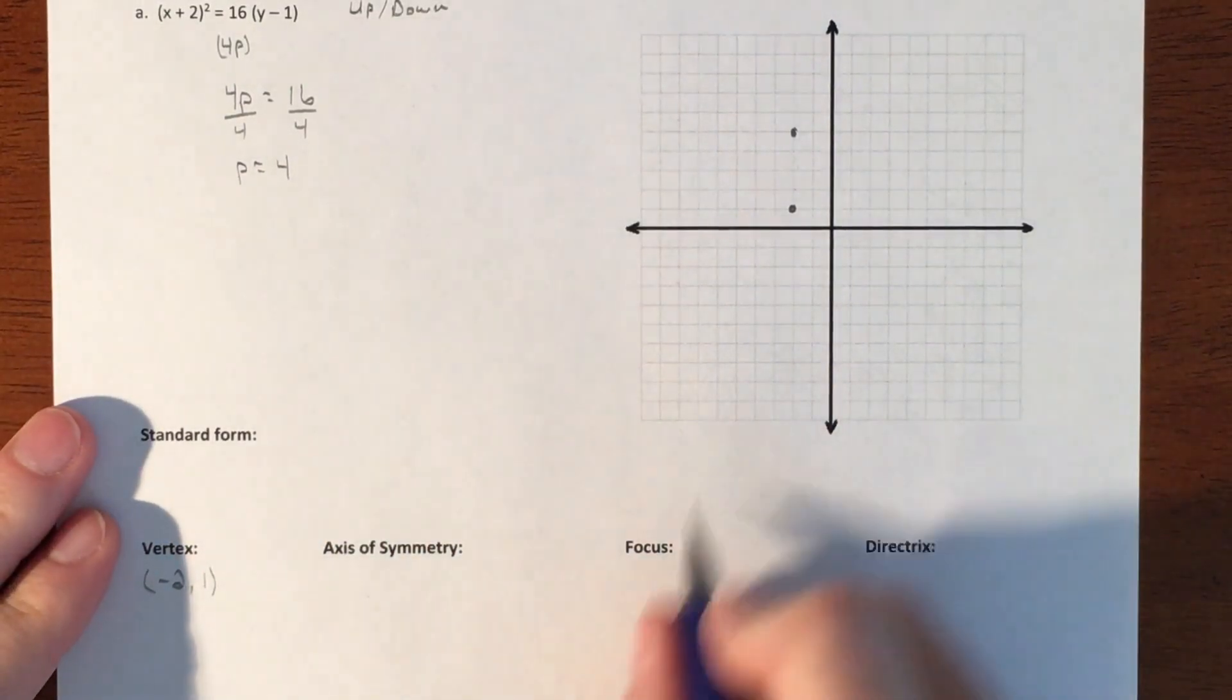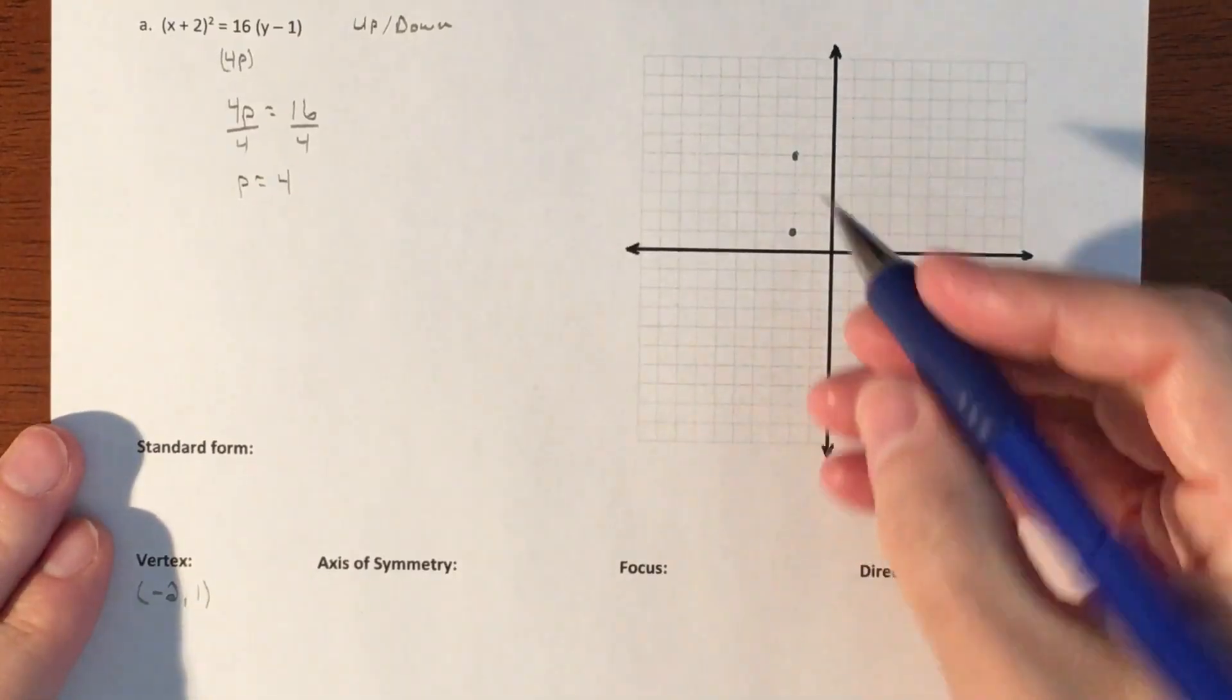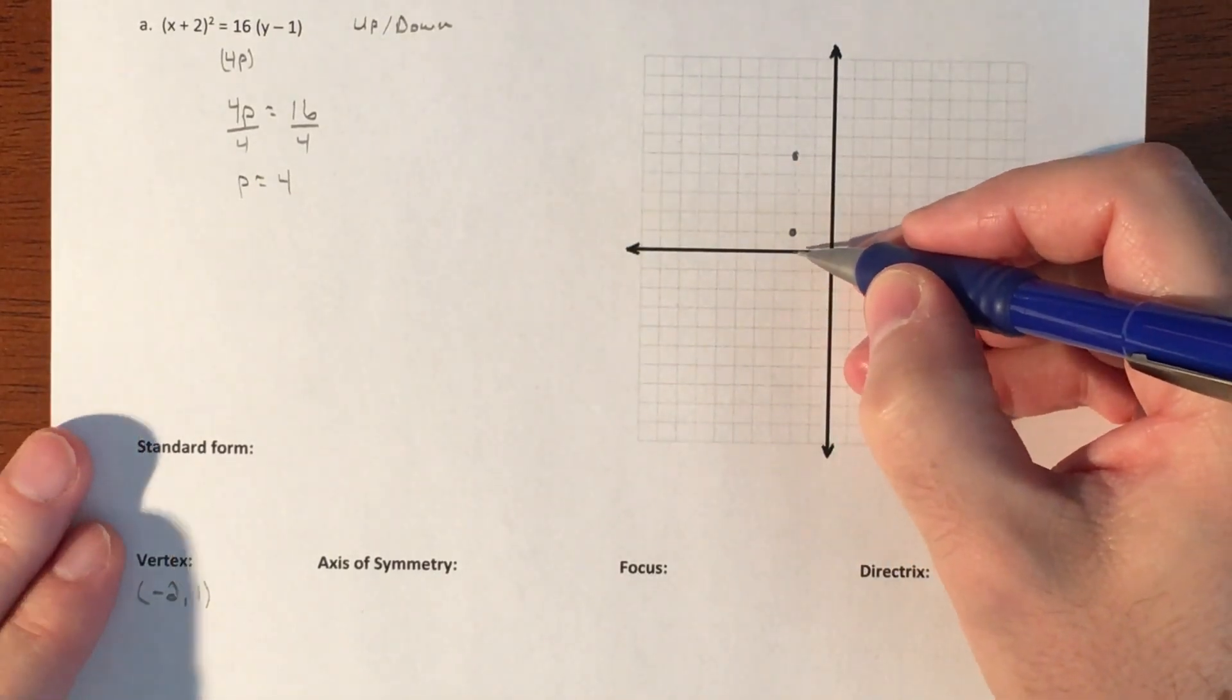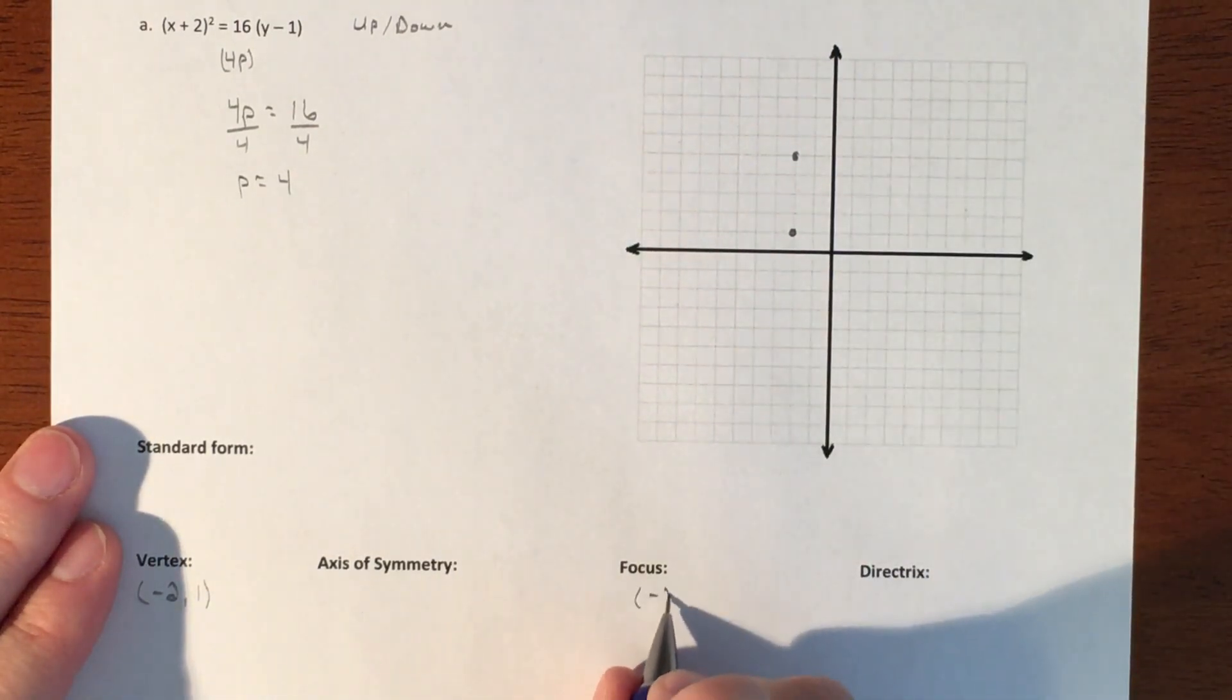P being positive means we're going in an upward direction. So we're going to go one, two, three, four. Our focal point is, I don't really need to try to figure that out, I'm just going to count. So we were two to the left and then one, two, three, four, five. So negative two, five.